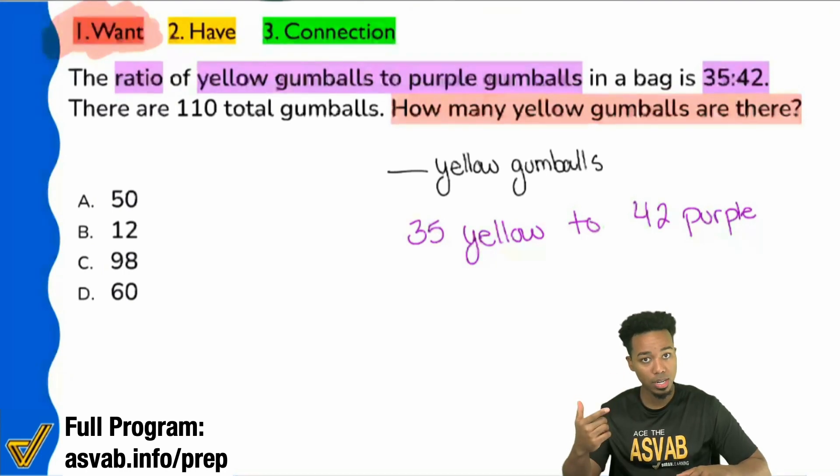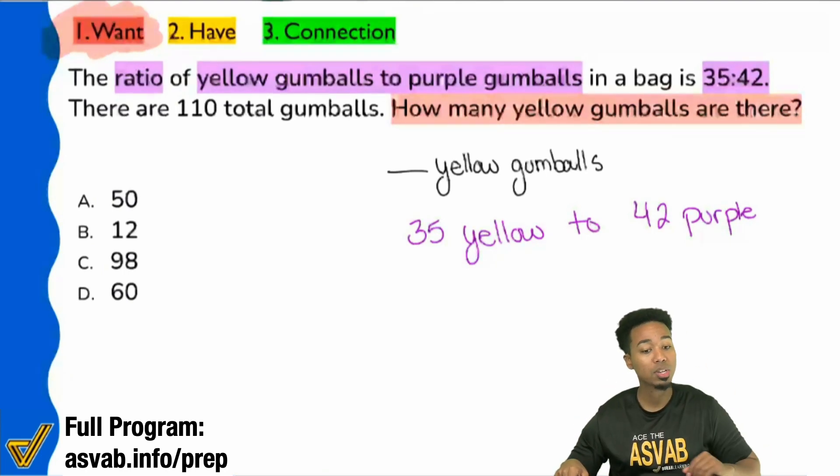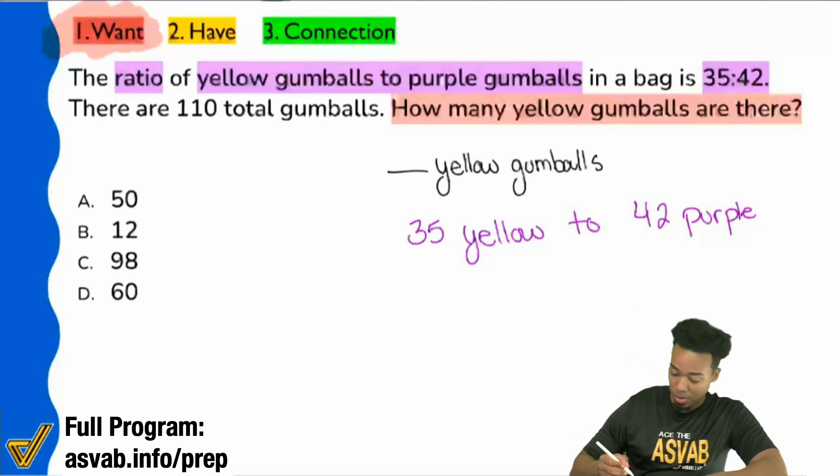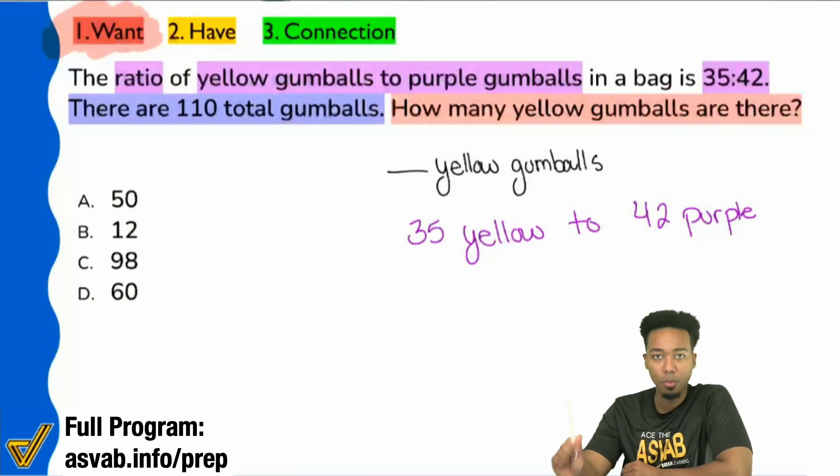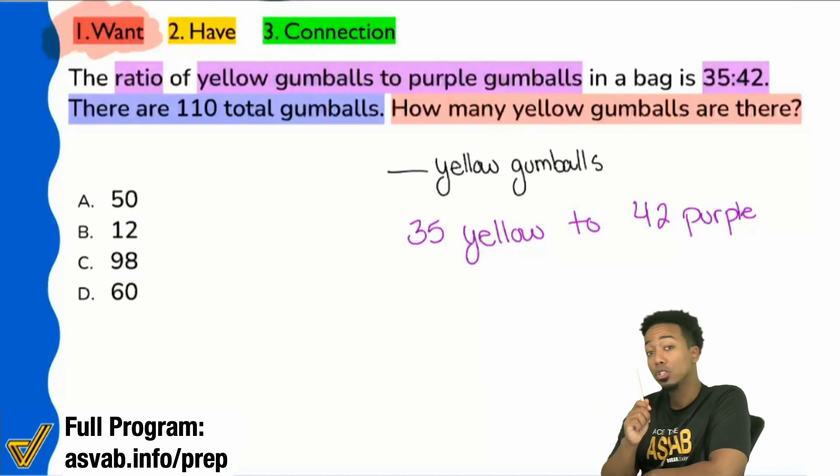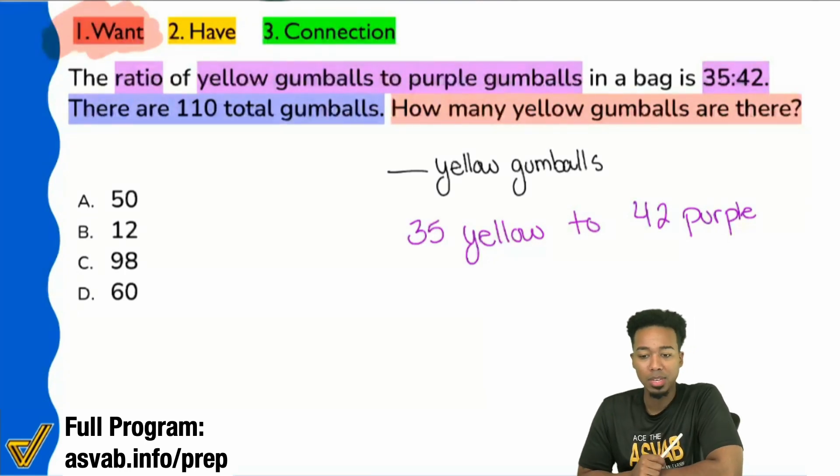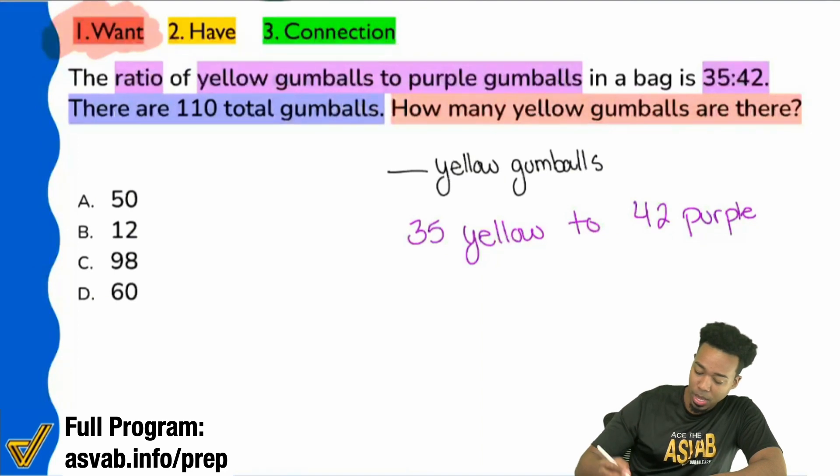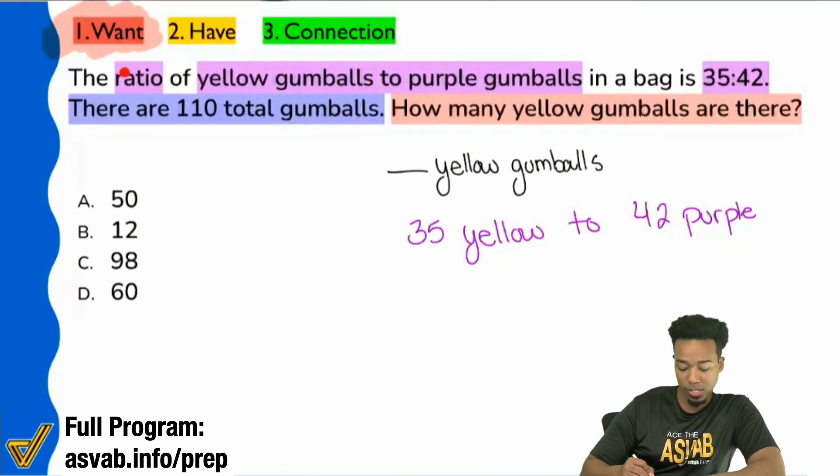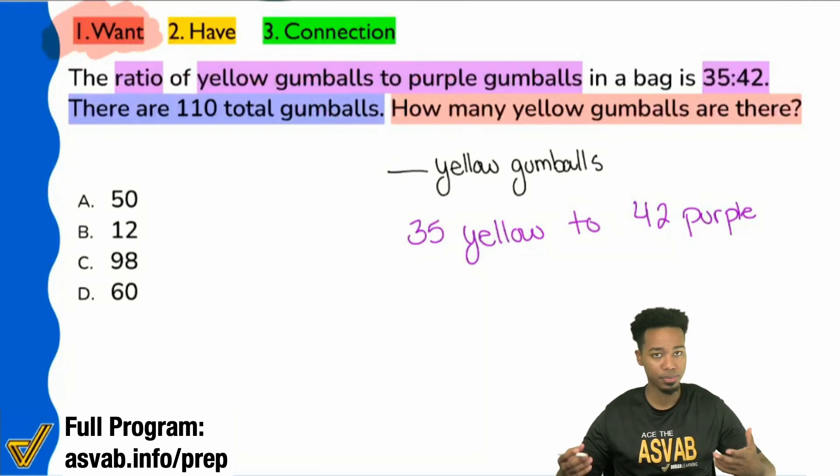Here's what we're going to get to right now. We're getting to a very important part. There's one more piece of information that we have not marked down. And that's going to be right here. Hey, there are 110 total gumballs. Confirm with me. Yes in the chat box. That says 110 total. Not 110 yellow. Not 110 purple. 110 total. Give me a yes in the chat box if you see that.